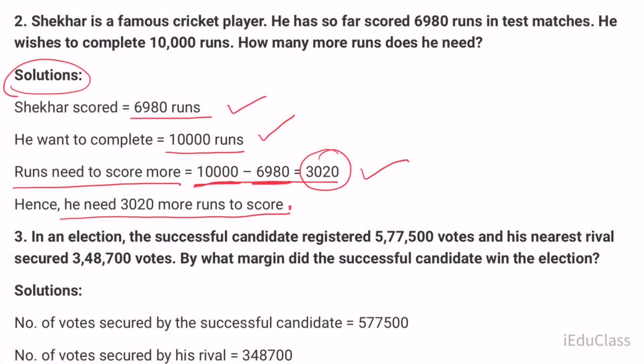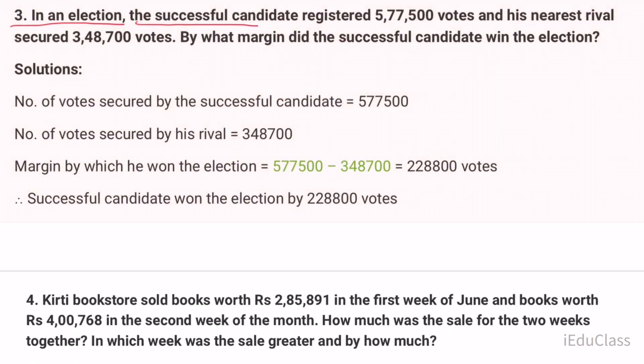Third question: In an election, the successful candidate registered 577,500 votes and his nearest rival secured 348,700 votes. By what margin did the successful candidate win the election?